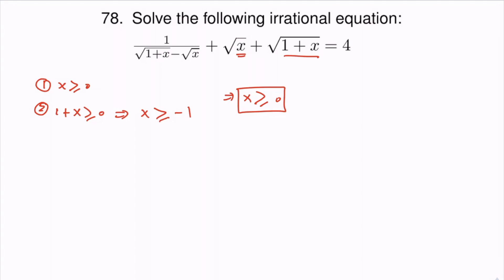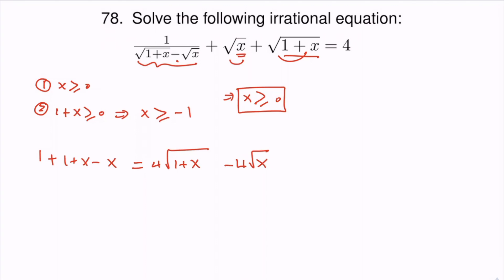Now we can find the least common denominator for these two terms. Let's multiply both sides by this expression, and therefore we will get one plus this multiplied by that — which will be this term squared minus this term squared — so we'll have one plus x minus x, which gives four times the square root of one plus x minus four times the square root of x. The two x's cancel from the left-hand side, and we get two equals four square root of one plus x minus four square root of x. Dividing both sides by two gives one equals two square root of one plus x minus two square root of x.